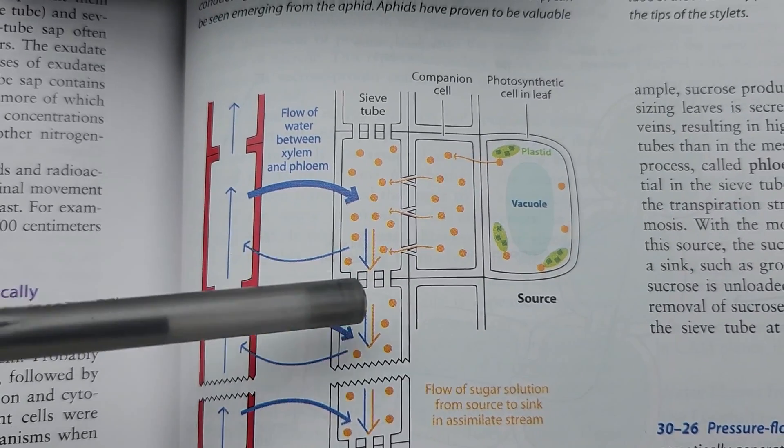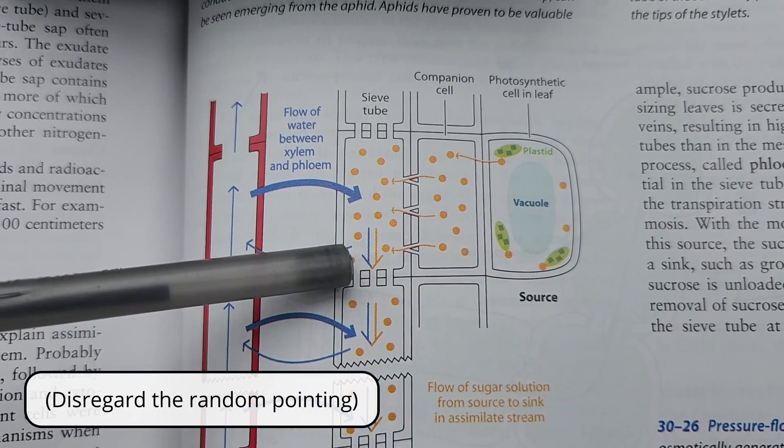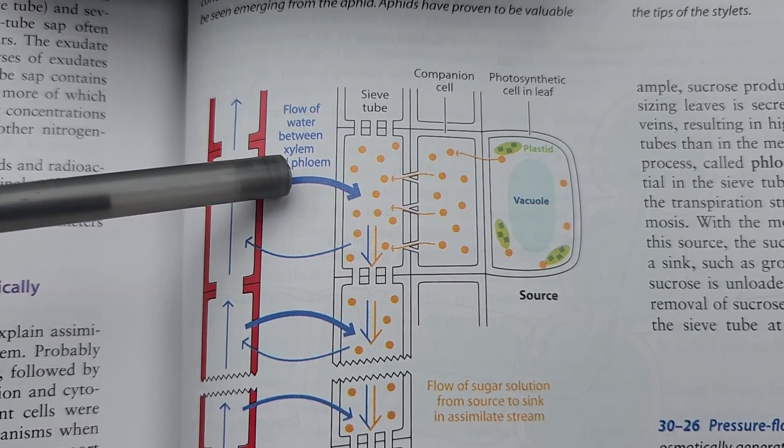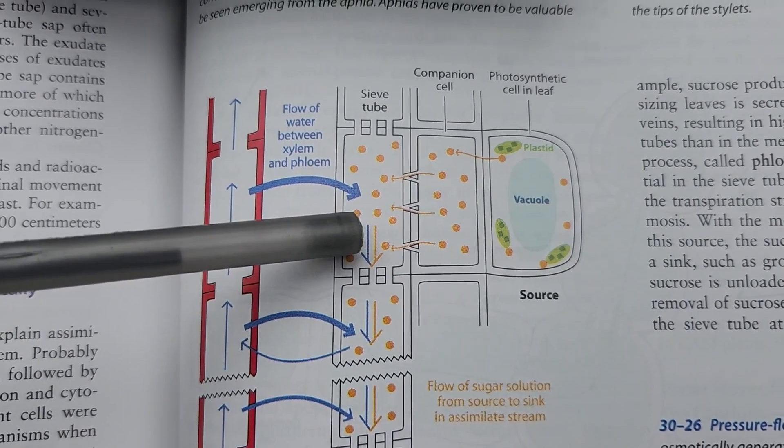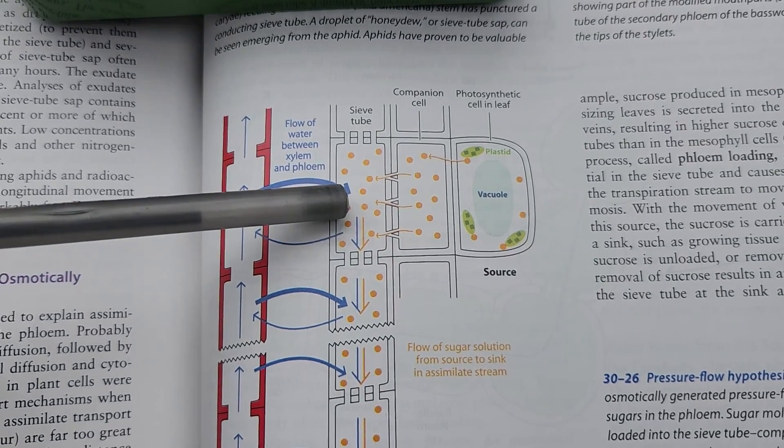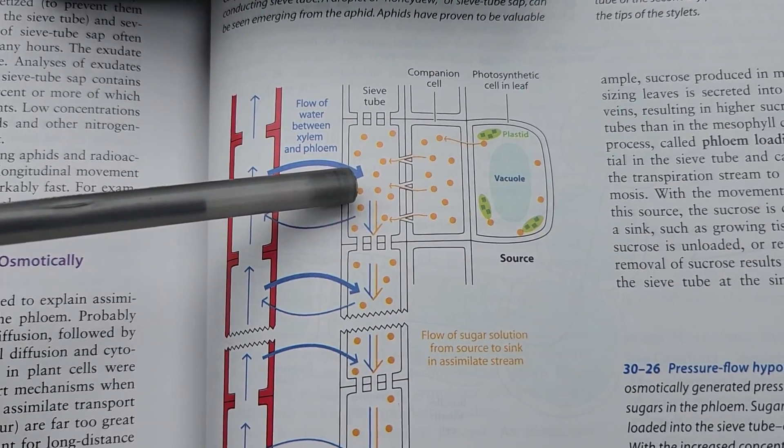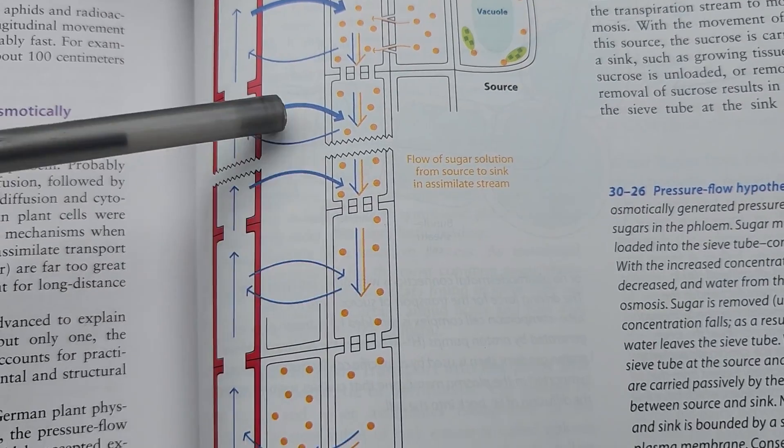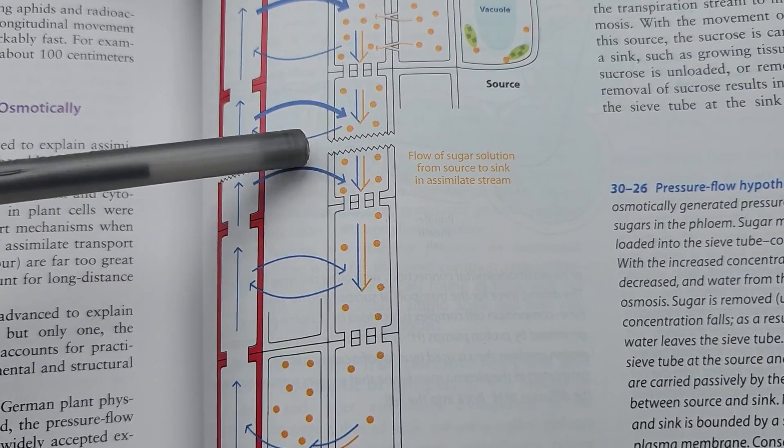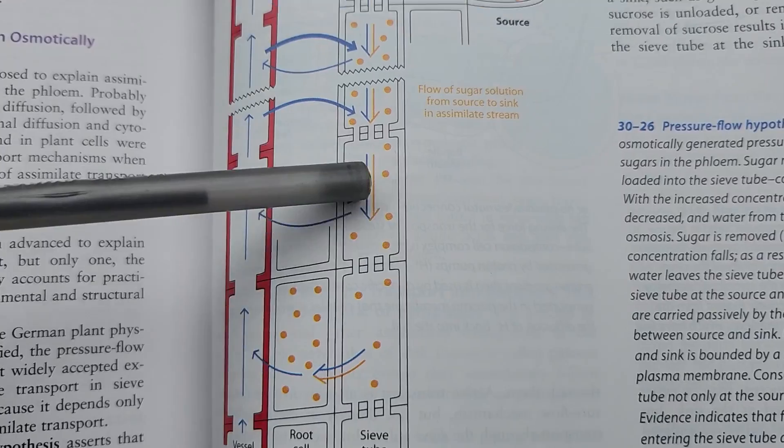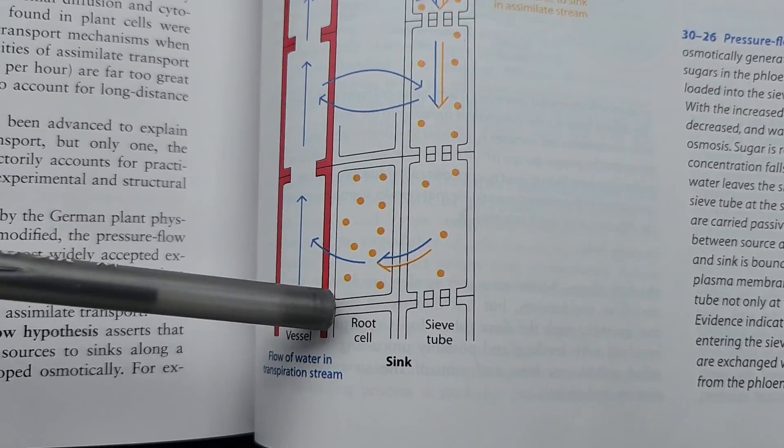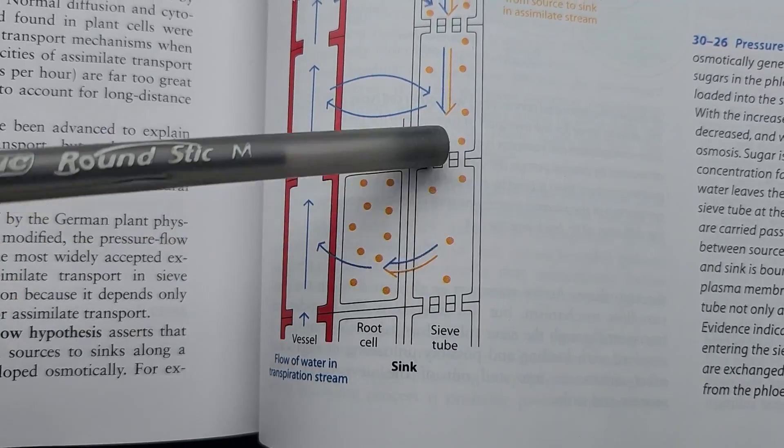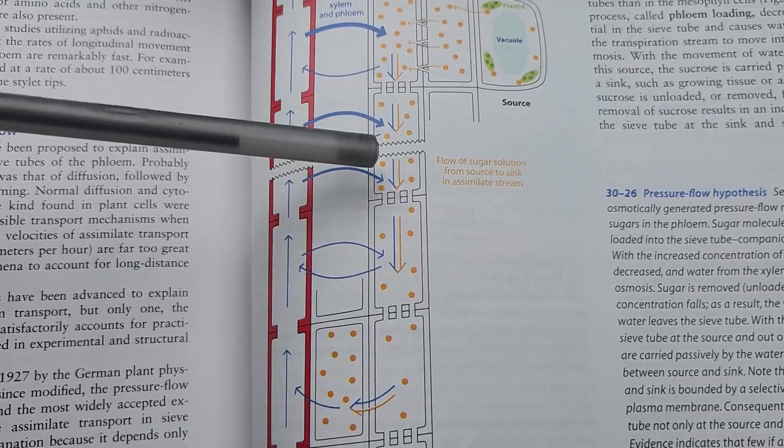And so if you're a phloem cell in a leaf, there's a lot of photosynthesis going on. There's a lot of sugar coming in. So you put the sugar in the phloem. Water rushes in to try to equalize it, and so now it's pushing down to a different area that's got less sugar. And when you get to the final destination of where that sugar is going, cells are taking the sugar out of the phloem. And once the sugar is taken out, the water leaves via the xylem. And now you have a vacuum of sorts, so more stuff is going to come to fill it.